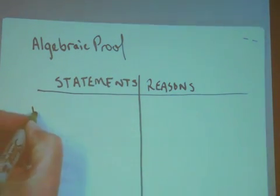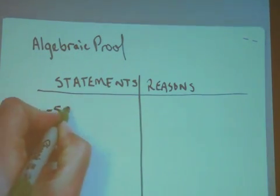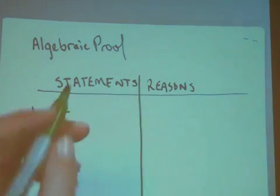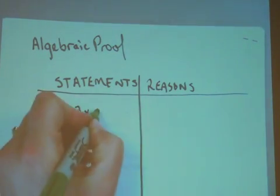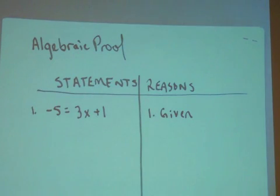Now, we like to number them. So, step number one, I'm going to give us the problem negative 5 is equal to 3x plus 1. And over here, we're going to say that that's been given.